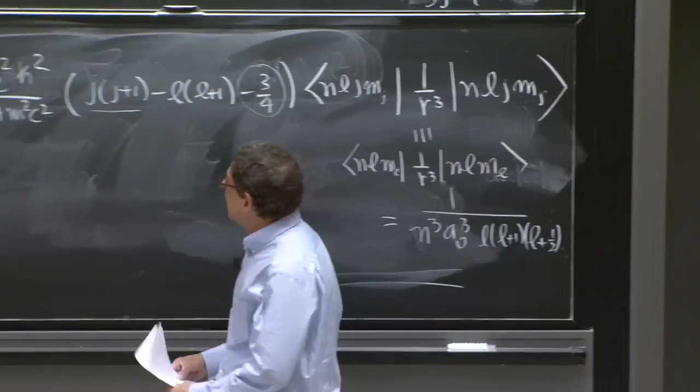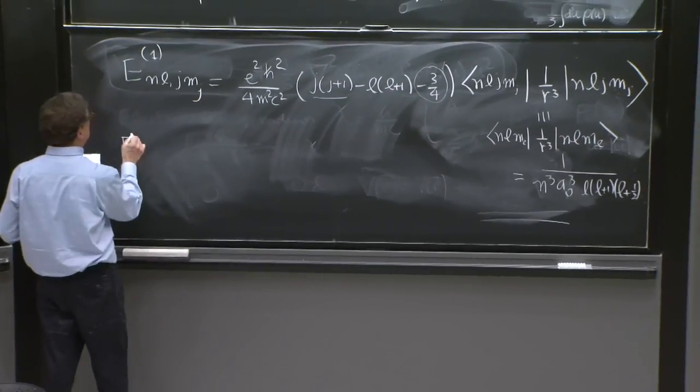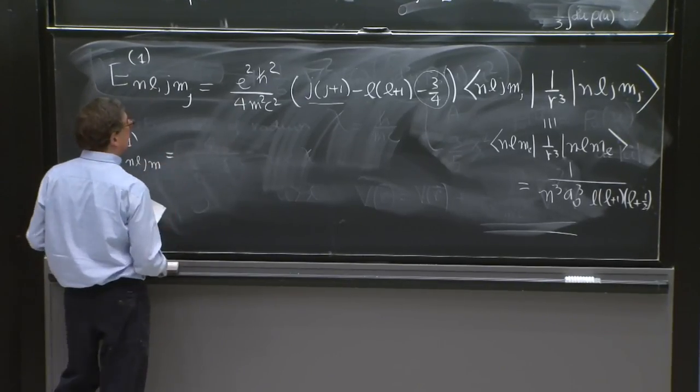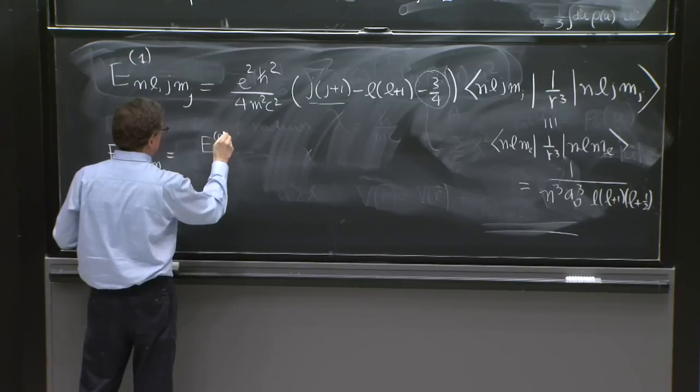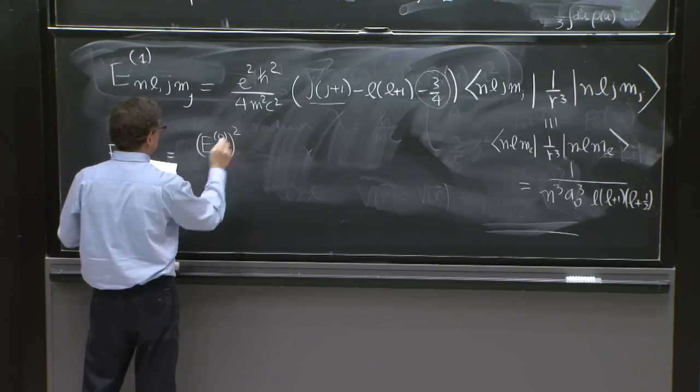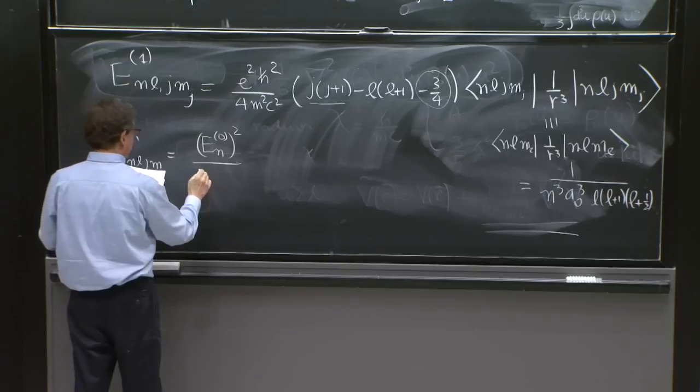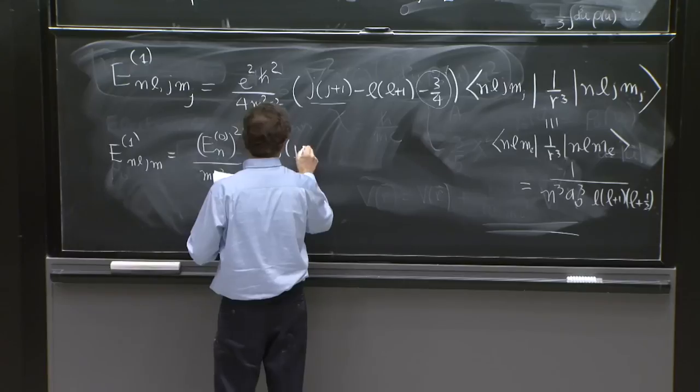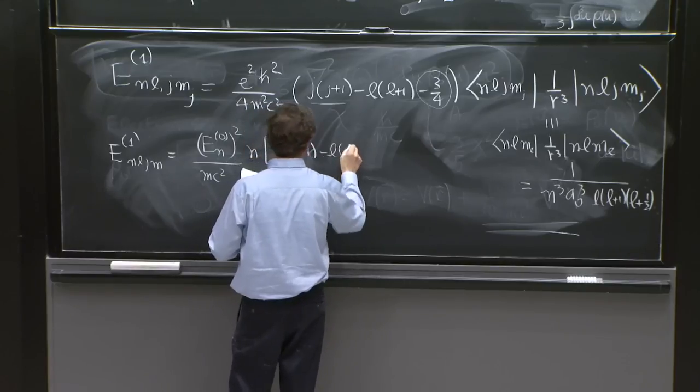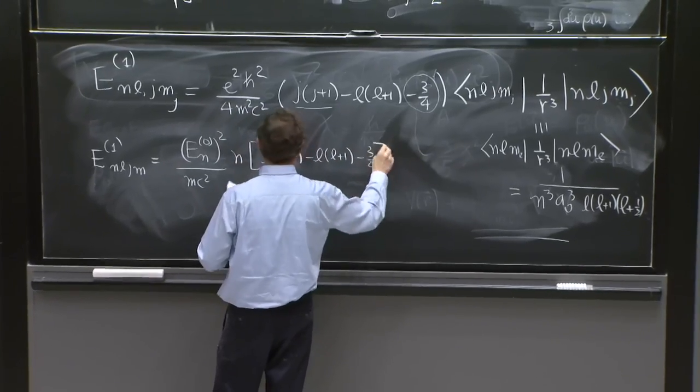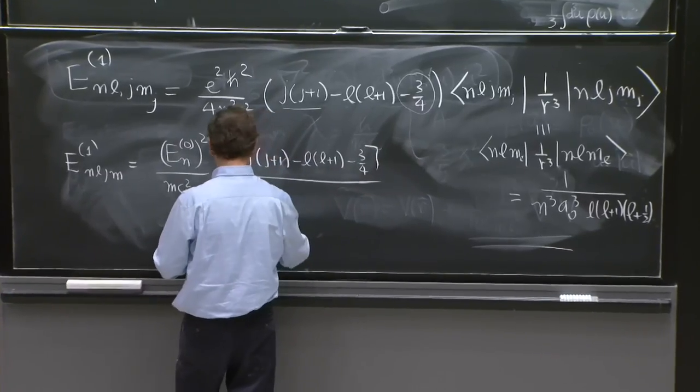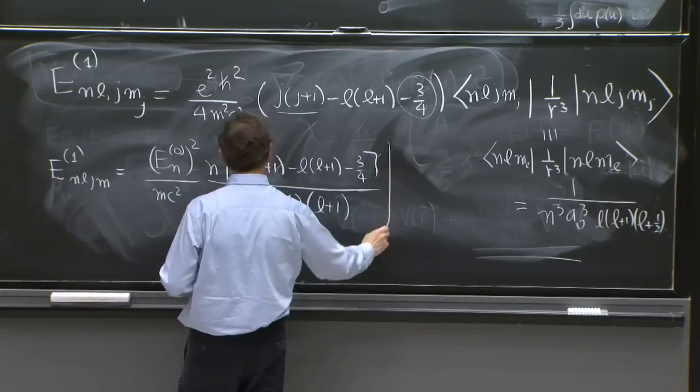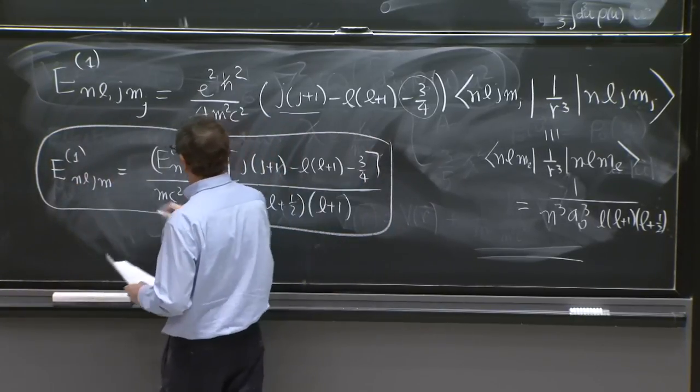And now we have E1 n l j m is equal to E n 0. This is yet another notation. This is the ground state energy here. M c squared n j j plus 1 minus l l plus 1 minus 3 quarters, over l, l plus 1 half, l plus 1. This is spin orbit.